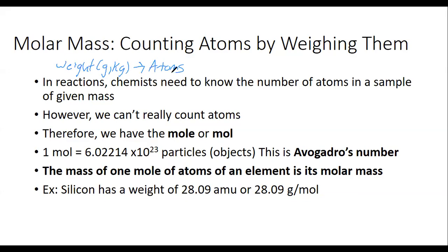Just as an example: C plus 4H equals CH4 — carbon plus four hydrogens makes methane. So we're saying one carbon atom plus four hydrogen atoms will make methane. In chemistry, we want to know how many atoms are reacting at any given time, but an atom is so small it's kind of pointless to say, 'I have a hundred billion atoms in this test tube.' Instead, what chemists have is called the mole.